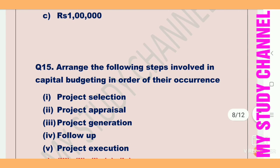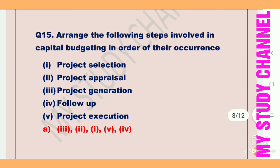Next question: arrange the following steps involved in capital budgeting in order of their occurrence. Option A is the right answer. The correct sequence is: first — project generation, second — project appraisal, third — project selection, fourth — project execution, and finally — follow-up.